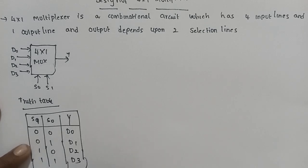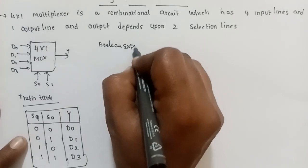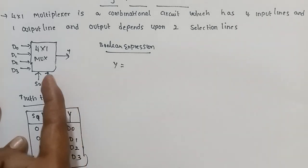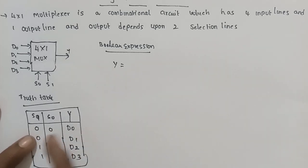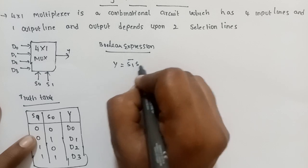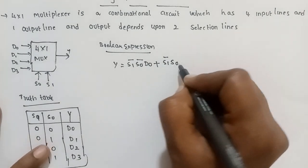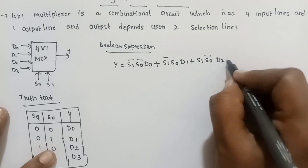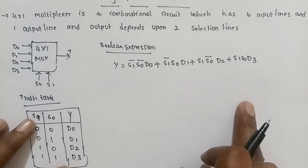Once the truth table is complete, we will find the Boolean expression. There is only one output Y. The Boolean expression is: Y = S1-bar · S0-bar · D0 + S1-bar · S0 · D1 + S1 · S0-bar · D2 + S1 · S0 · D3.